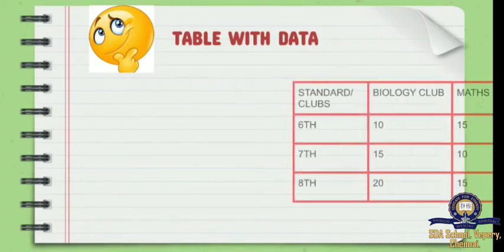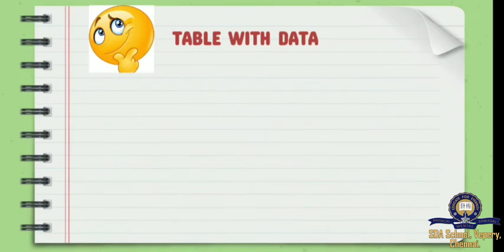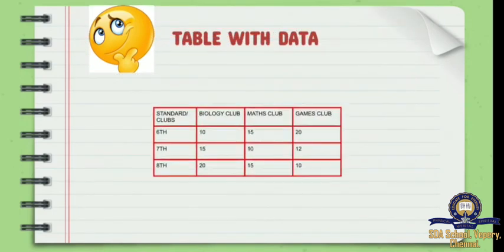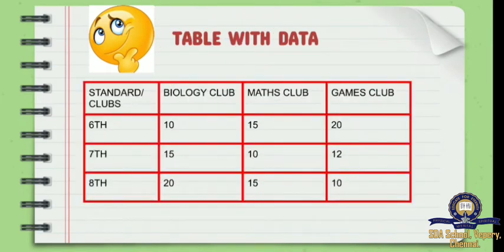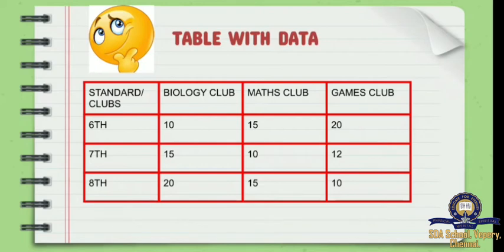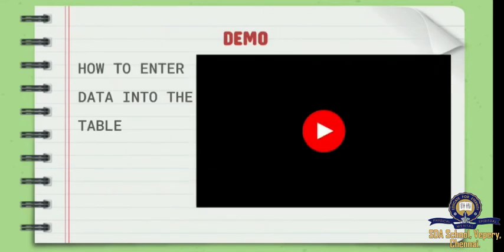We will create a tabular column for school clubs — biology club, maths club, and games club — for 6th, 7th, and 8th standard. The 6th standard has 10 students in biology club, 15 in mathematics club, and 20 in games club. The 7th has 15, 10, and 12 respectively. The 8th has 20 students in biology, 15 in maths, and 10 in games. I have given a demo video of how to enter data into the table.